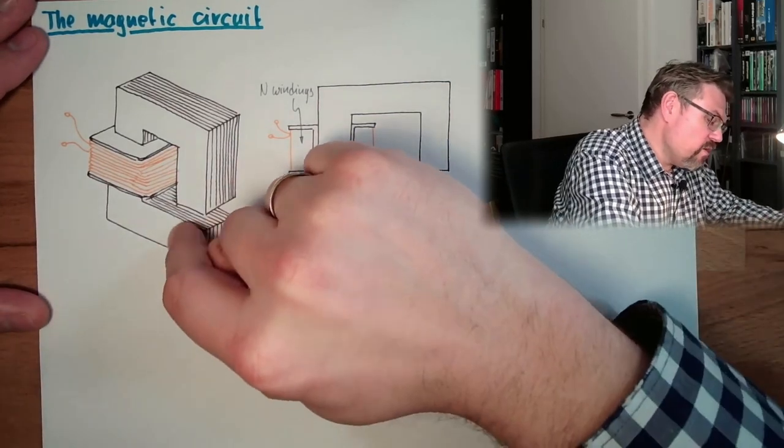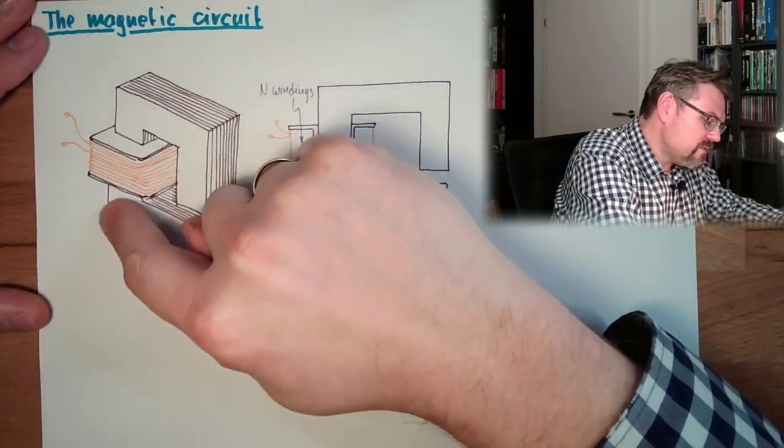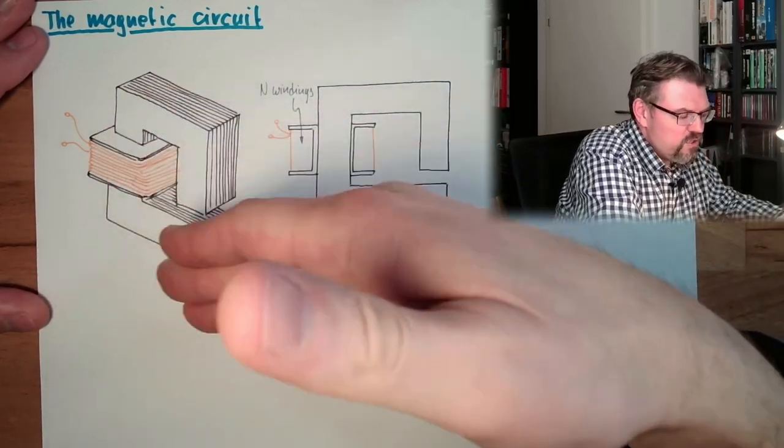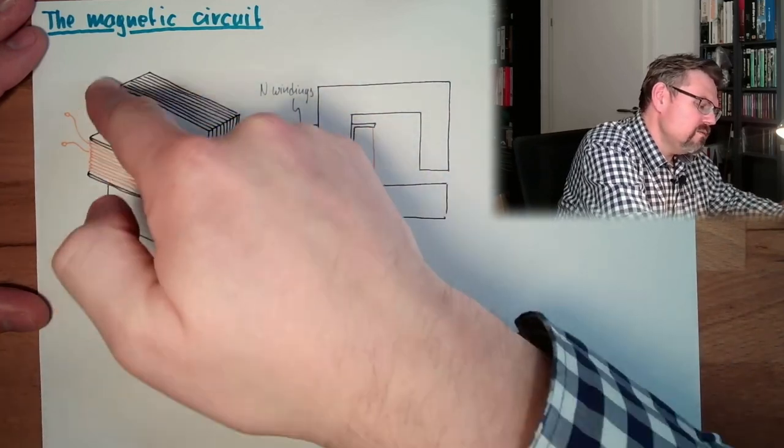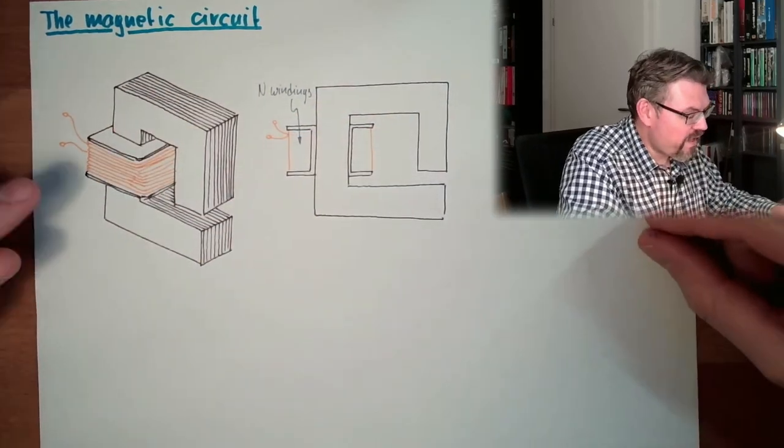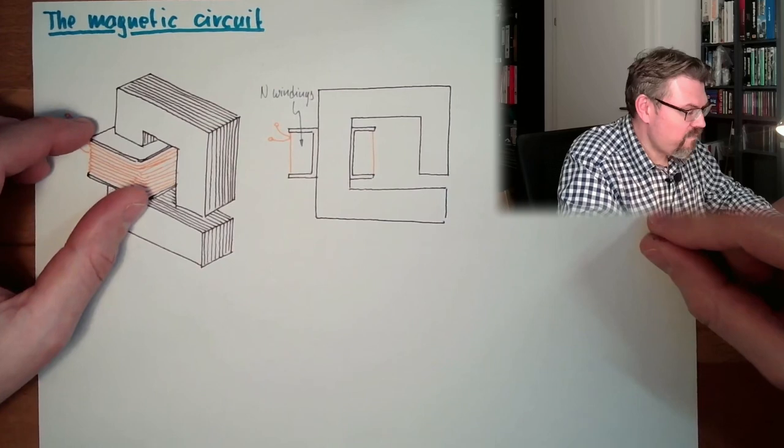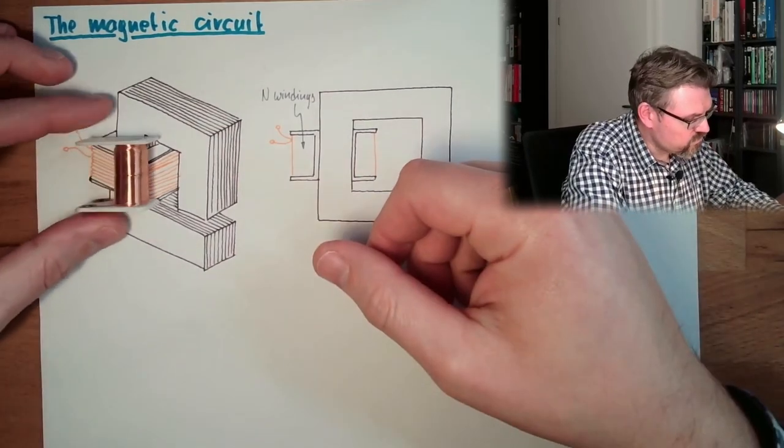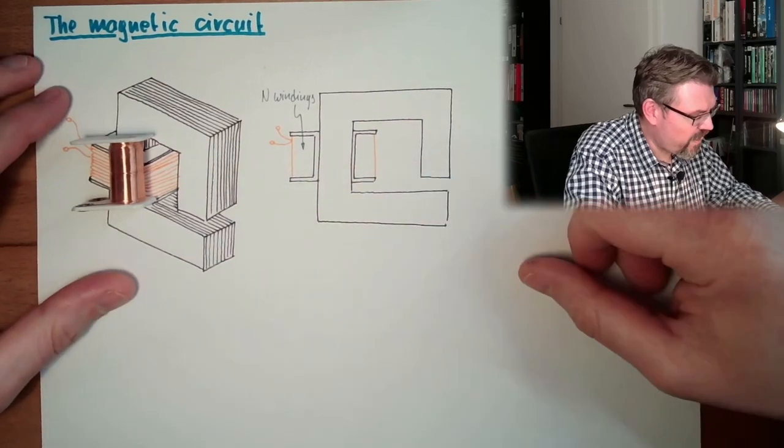We have here some iron parts. This is a G-shaped part here. And we have a coil sitting on this iron part. Here we have the side view, so here we would have the coil. There are some windings of this coil, end windings.